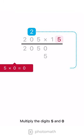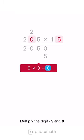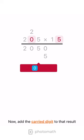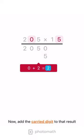Multiply the digits 5 and 0. Now, add the carried digit to that result. Write the result, 2, in the answer line.